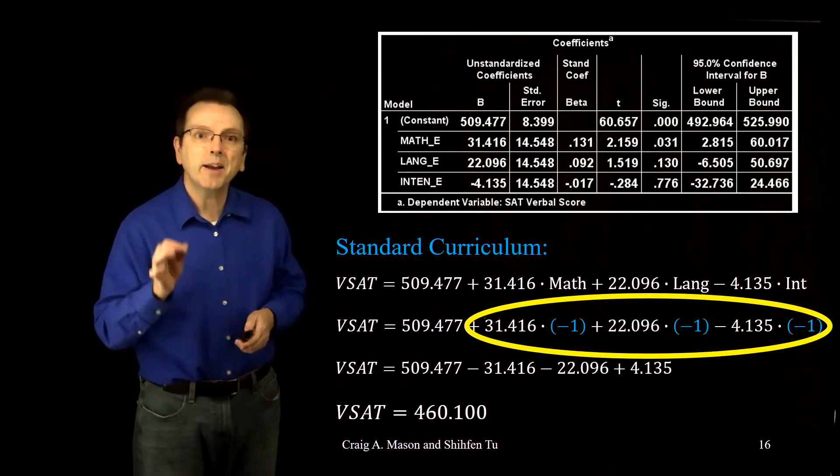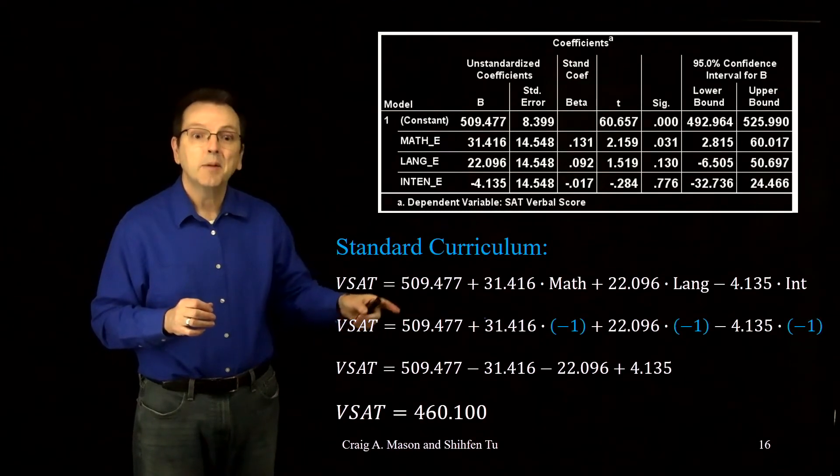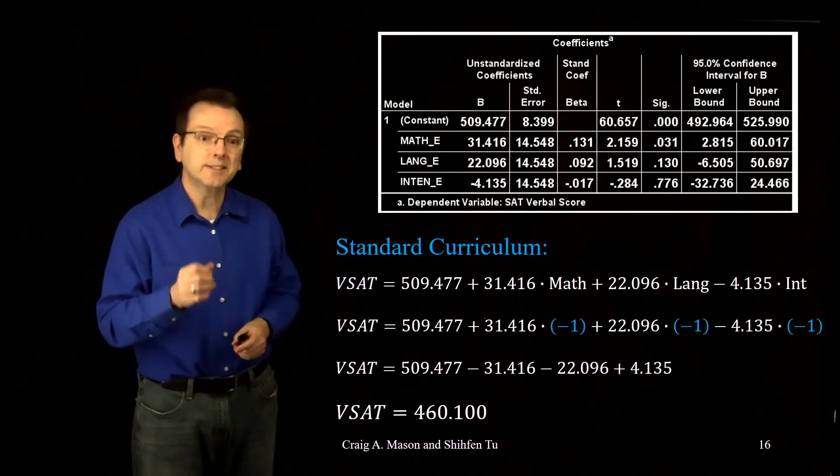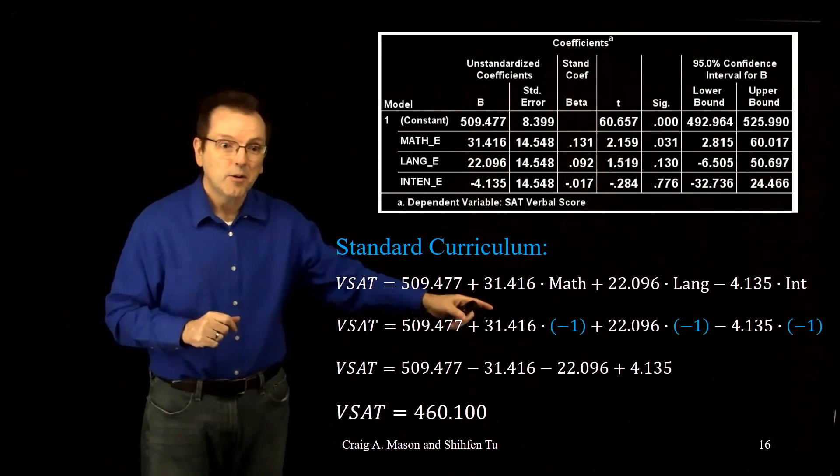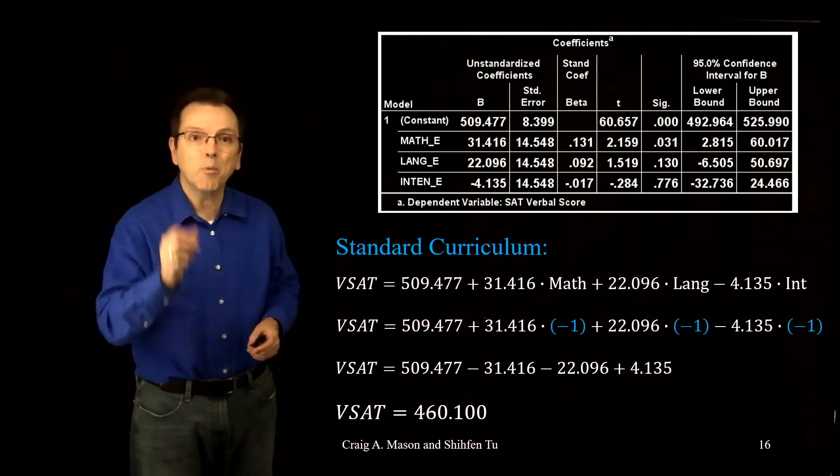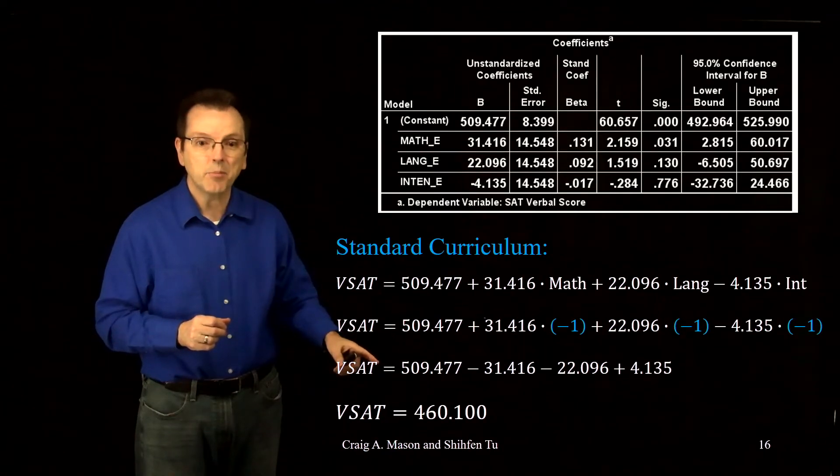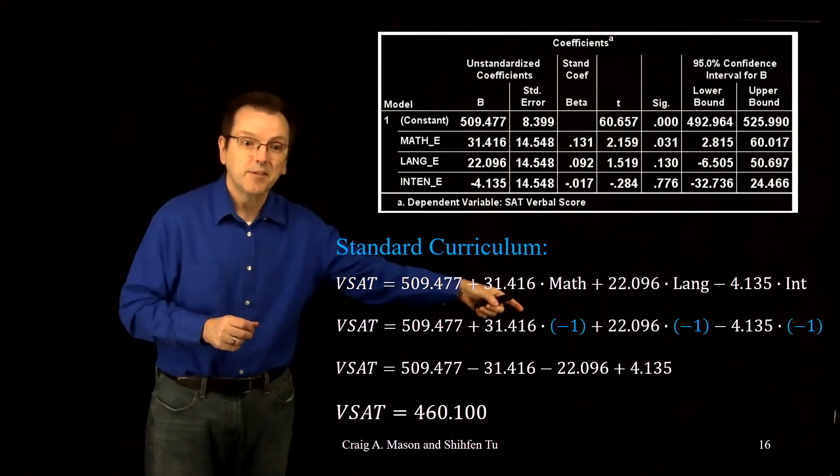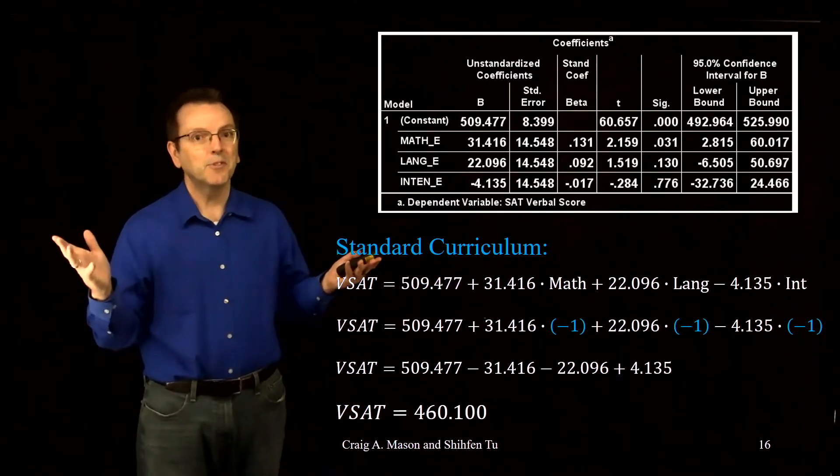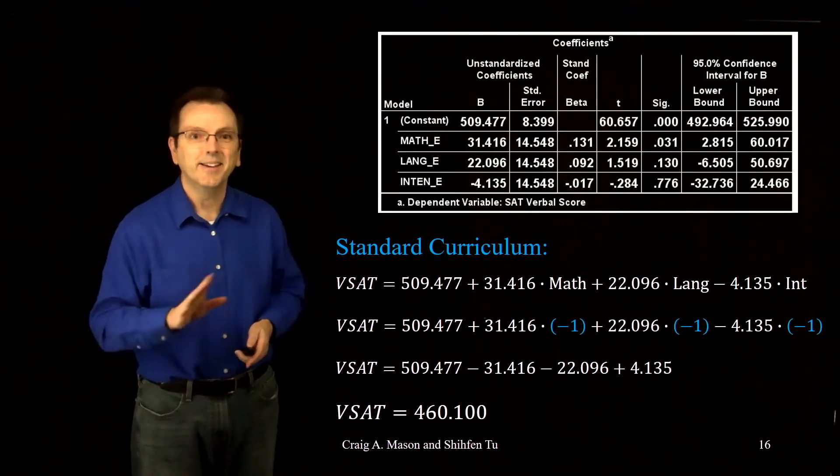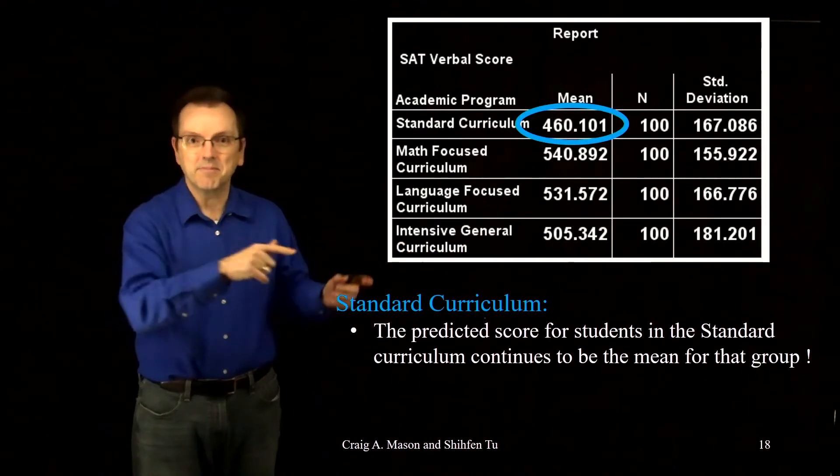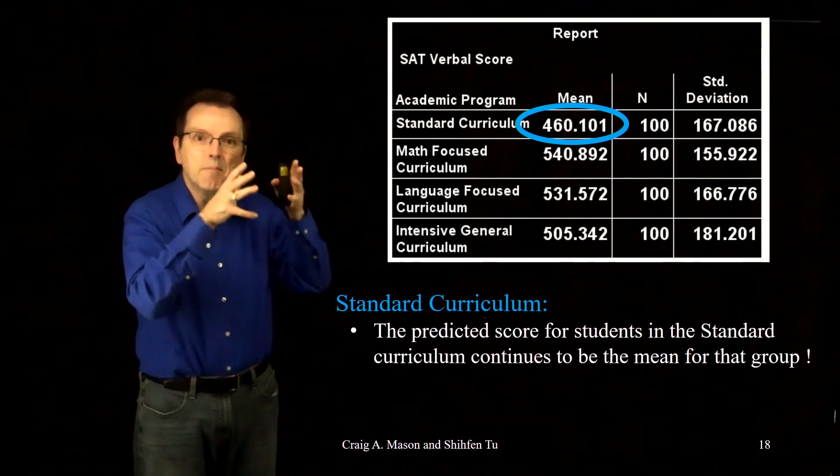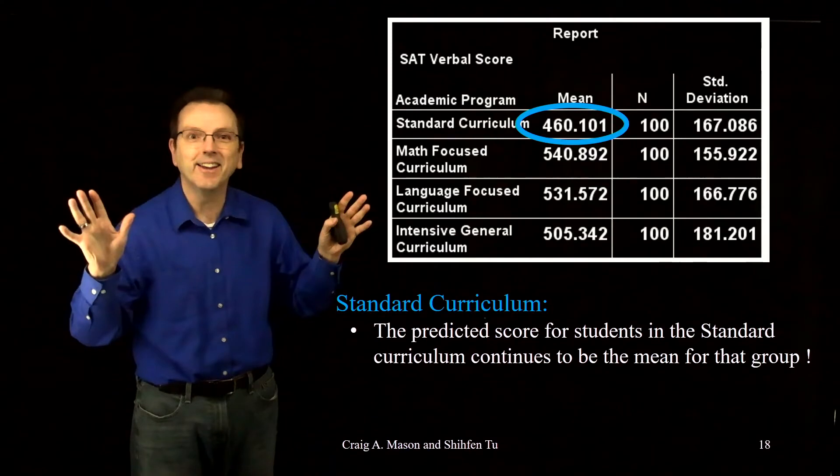So plugging in the minus ones, we get 509.477 plus 31.416 times negative one, plus 22.096 times negative one, minus 4.135 times negative one. That solves to 509.477 minus 31.416 minus 22.096 plus 4.135, which solves to 460.1. And yes, if you're wondering that even with all those minus one values for the effect codes, we still get the predicted score that's equal to the mean of that group within rounding error. I love that, right?